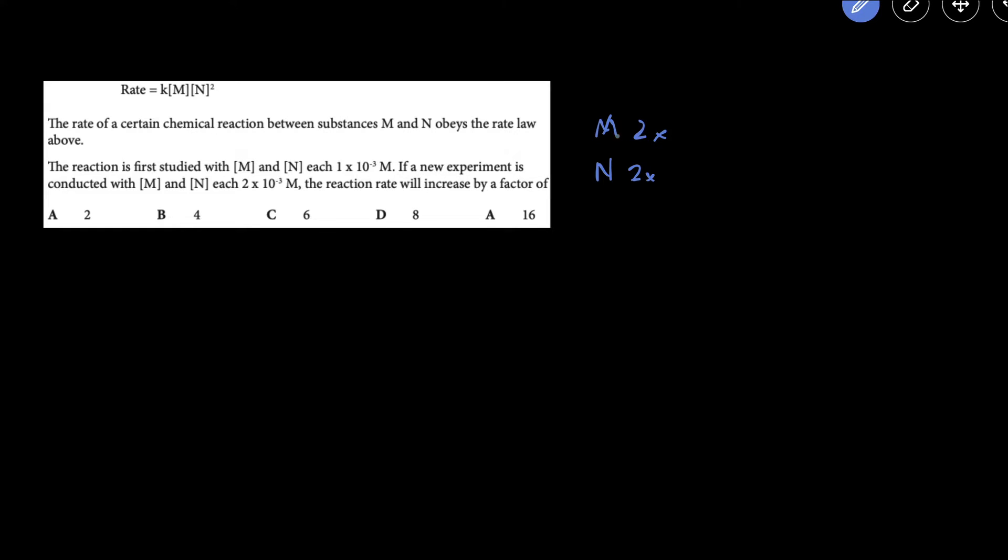Well, since we know that the concentrations of M and N both doubled, we can just plug that into the rate law. So we can put a 2 right here for M and then multiply by 2 for the N, but N is to the second power, to the second order. Then we just evaluate this: 2 times 2 squared, that's going to equal 2 times 4, that's 8.